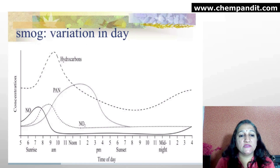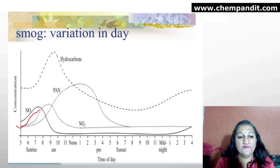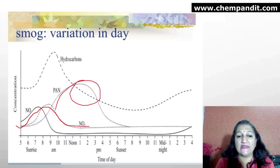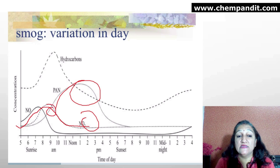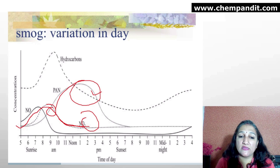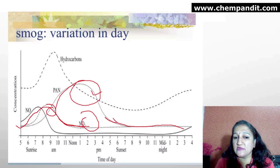This is a graphical representation of smog variation in a day. In the morning at sunrise, traffic increases on the road. Nitrogen oxides and VOCs increase. As sunlight increases, nitrogen dioxide and PAN — peroxyacyl nitrate — increase as secondary pollutants. Nitrogen dioxide reacts with VOCs to form PAN, whose concentration increases. In the evening, concentrations decrease. This pattern is repeated each day.